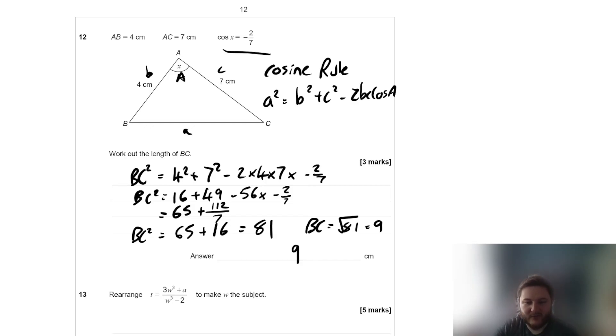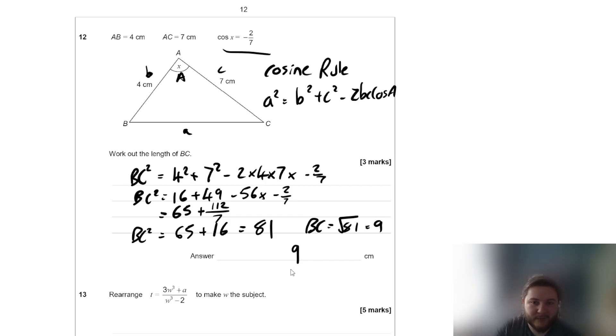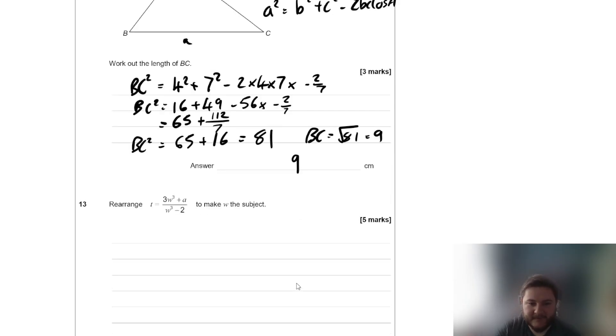BC is 9 — another really good question, quite a standard cosine rule application in GCSE Further Maths, which is nice.